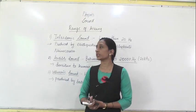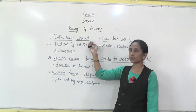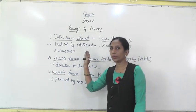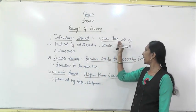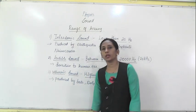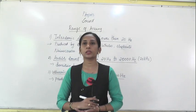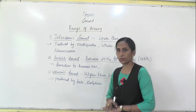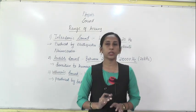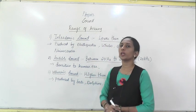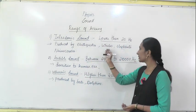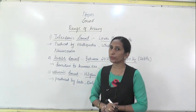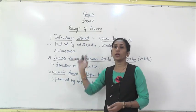The first level is infrasonic sound. Infrasonic sound means the frequency of sound which is lower than 20 hertz. The sound which is lower than 20 hertz is called infrasonic sound, and the human ear cannot hear this sound. It is produced by earthquakes, whales, elephants, and rhinoceros — these animals produce these waves, and earthquakes also produce this frequency.